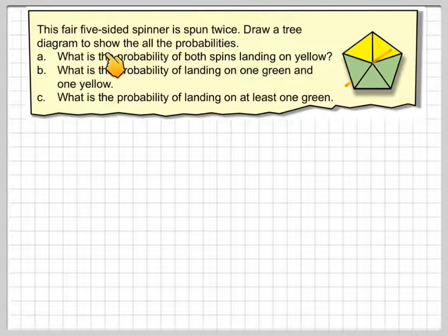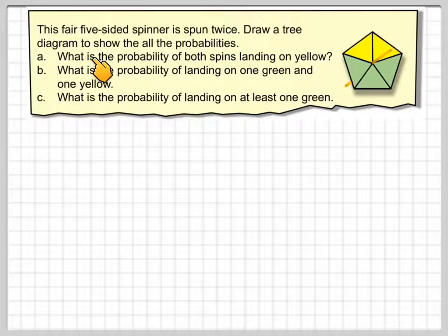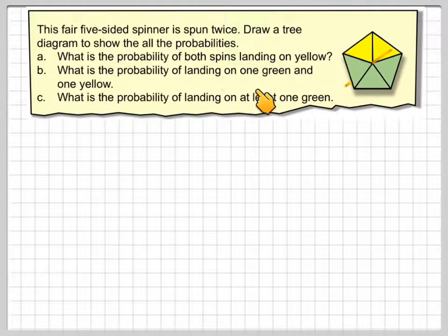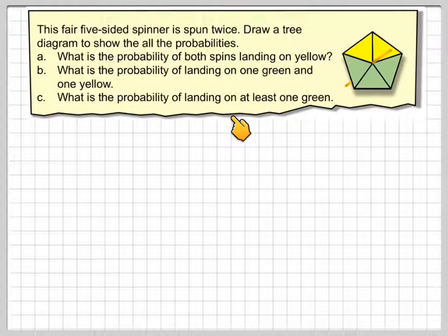A fair five-sided spinner is spun twice. Draw a tree diagram to show all the probabilities. What is the probability of both spins landing on yellow? What is the probability of landing one green and one yellow? And what is the probability of landing at least one green?